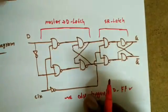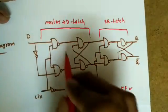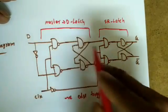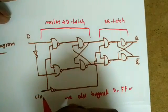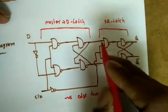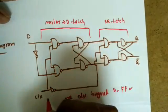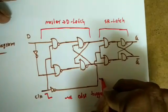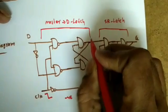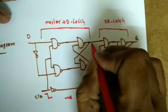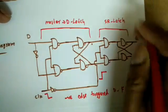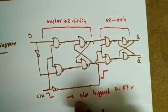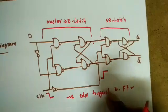In conclusion: when clock equals 1, the D input is transferred to the master. Even if the input changes many times, the final output does not change until the clock transitions from 1 to 0. The moment the clock goes from 1 to 0, the slave enable becomes 1, and whatever is presently available at the master output is transferred to the final output Q. This is the operation of the master-slave D flip-flop, also called negative edge-triggered D flip-flop.